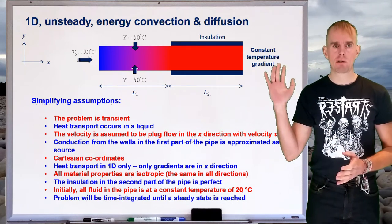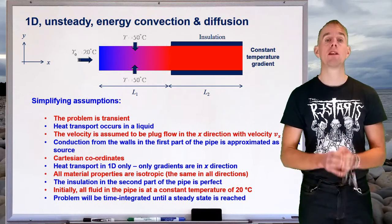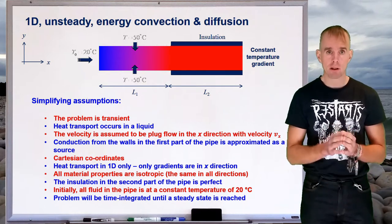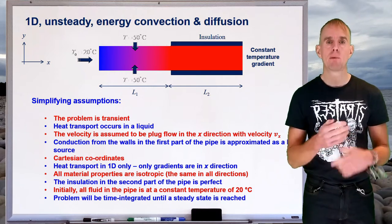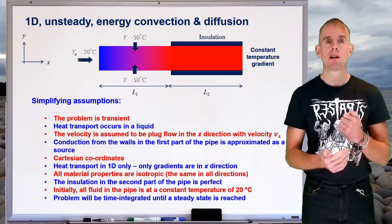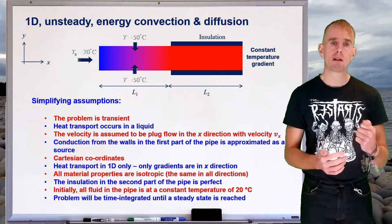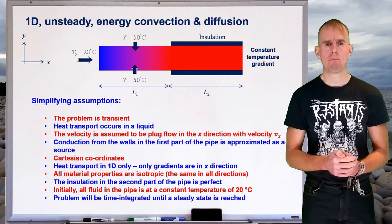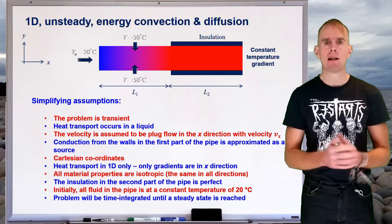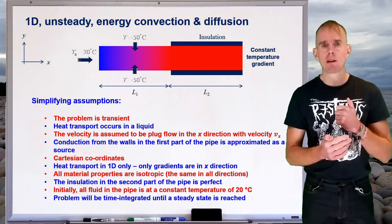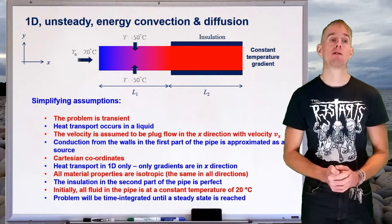So here are our assumptions and our flow domain. The next important thing we need to do is sit and think — we need to construct a mental model for what's happening here. If we do this relatively well, we can look at the solution the computer calculates and say either 'yes, I agree with that,' or 'hmm, I think there's something wrong with that.' The ability to say there's something wrong is one of the main reasons why we have to think carefully about our problem before we start solving it.